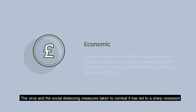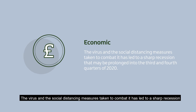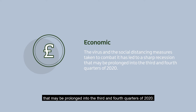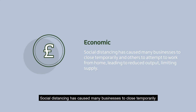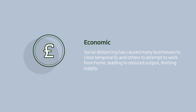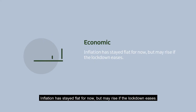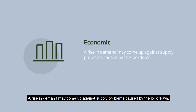Economic. The virus and the social distancing measures taken to combat it have led to a sharp recession that may be prolonged into the third and fourth quarters of 2020. Social distancing has caused many businesses to close temporarily and others to attempt to work from home, leading to reduced output limiting supply. Inflation has stayed flat for now, but may rise if the lockdown eases. A rise in demand may come up against supply problems caused by the lockdown.